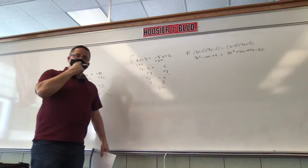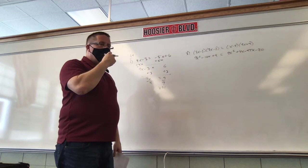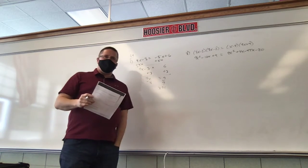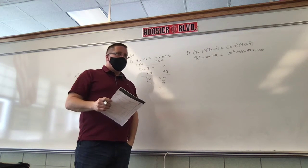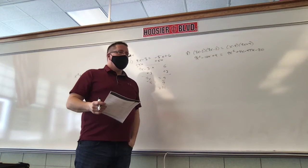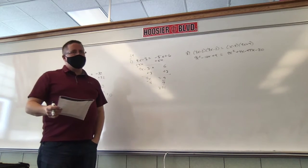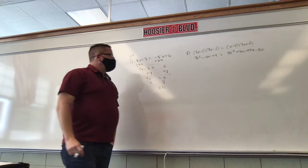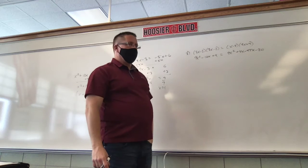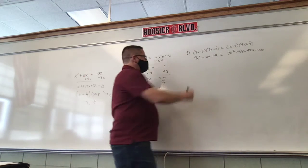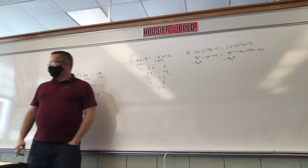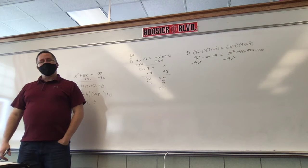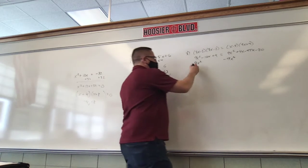Quadratics, and anything second degree or higher, must equal 0. Now, do I need to make this current problem equal 0? Is it a quadratic? It is right now, but I have 9x squared on each side. If I subtract 9x squared from each side, they're gone — so it's only temporarily a quadratic. So it doesn't have to equal 0.